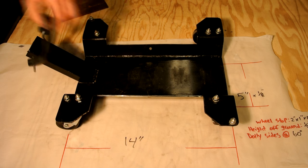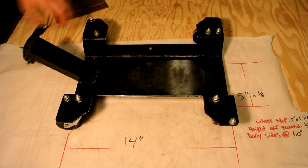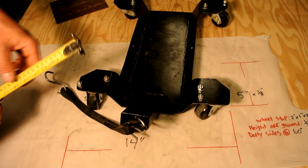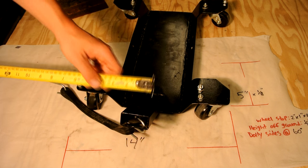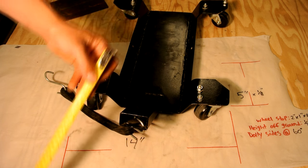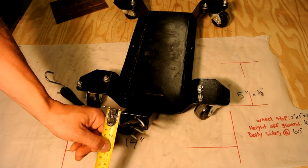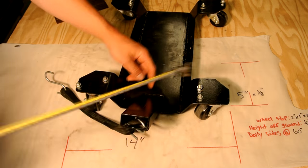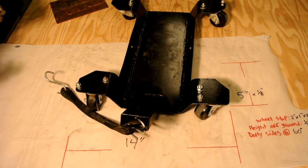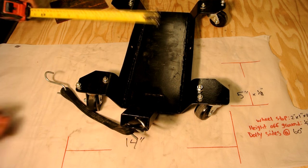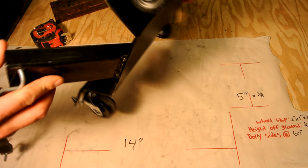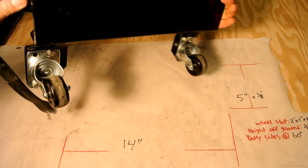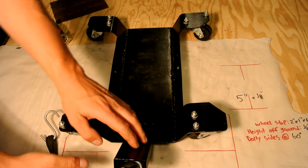Now what I've done with the wheel stop. This is 2 inch by 1 inch cut at 6 inches long. And I've just welded that on right to the front of that wheel dolly. So that's where the tire will roll up and stop onto.